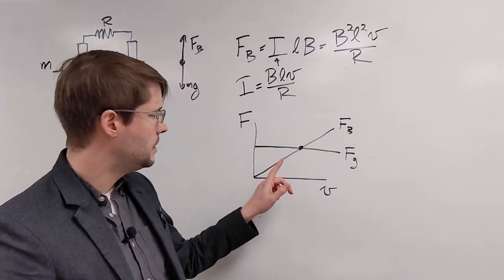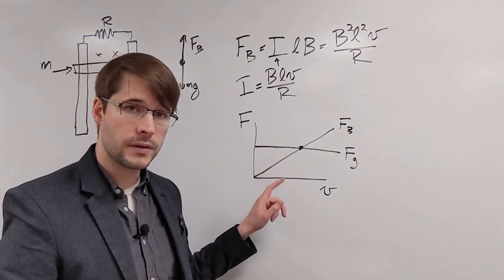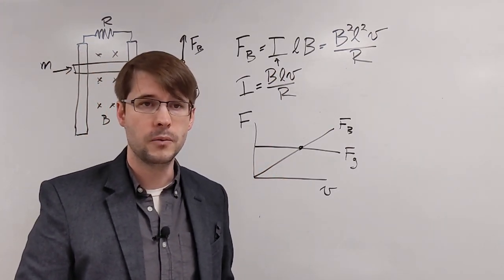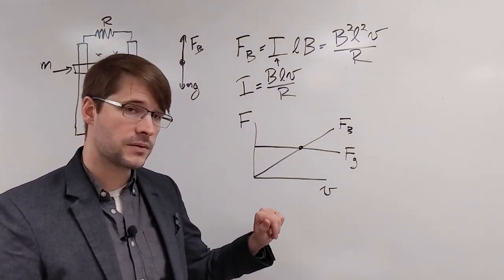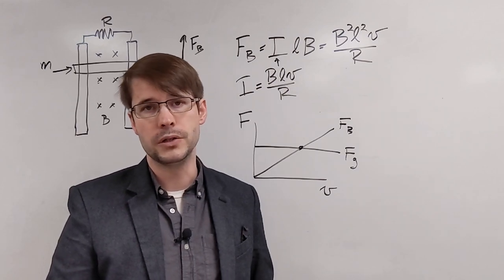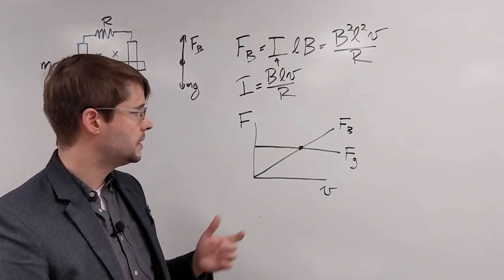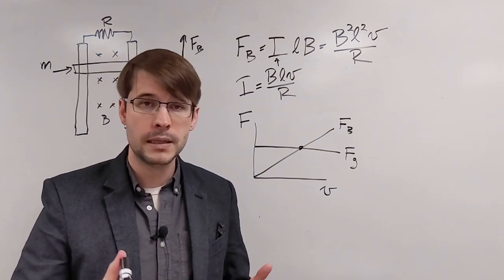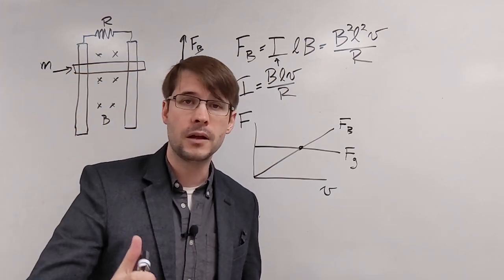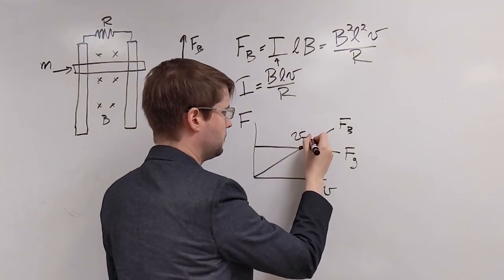If the bar was traveling slower, then the gravitational force would be winning out and it would speed up. And if it was traveling faster than this velocity, the magnetic force would be larger and it would slow down. And so this is actually a version of terminal velocity where the object will slow down and travel at a constant speed downwards once these two forces are balanced.